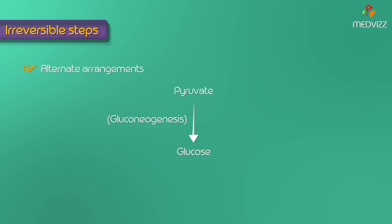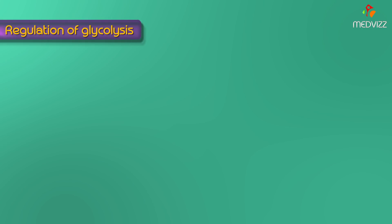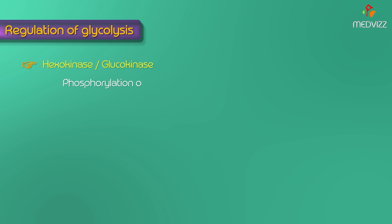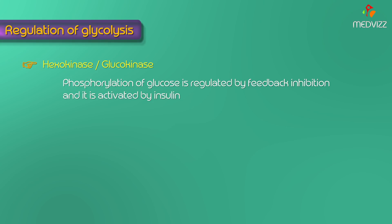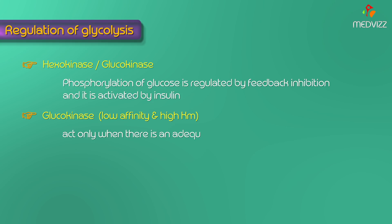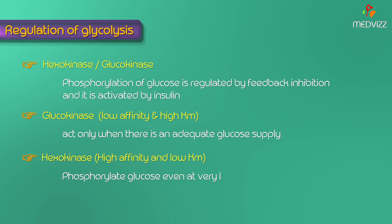Now let us see how glycolysis is regulated. Three enzymes — hexokinase, phosphofructokinase, and pyruvate kinase — catalyzing the irreversible reactions regulate glycolysis. The phosphorylation of glucose by hexokinase and glucokinase is regulated by feedback inhibition and activated by insulin. Glucokinase has low affinity and high KM for glucose, acting only when there is adequate glucose supply. Hexokinase with high affinity and low KM can phosphorylate glucose even at very low concentrations, making glucose available to brain and muscles.